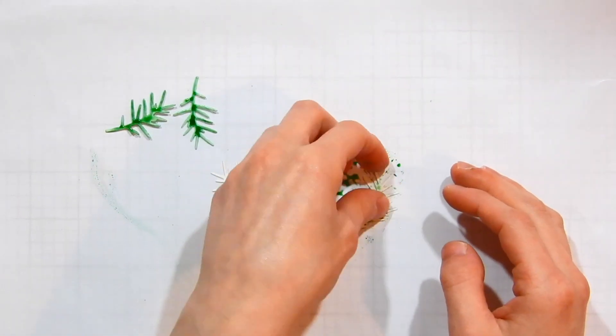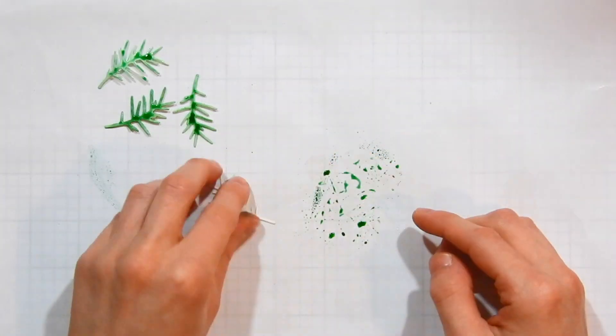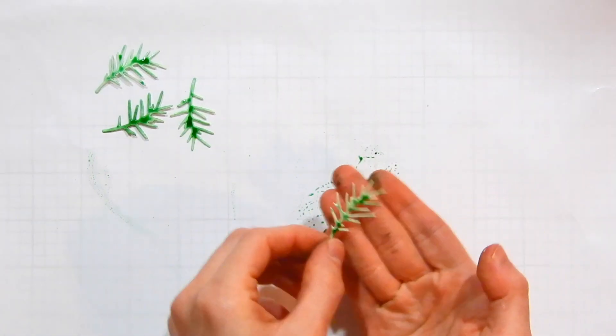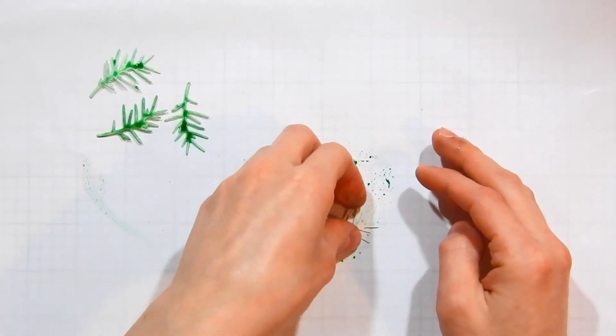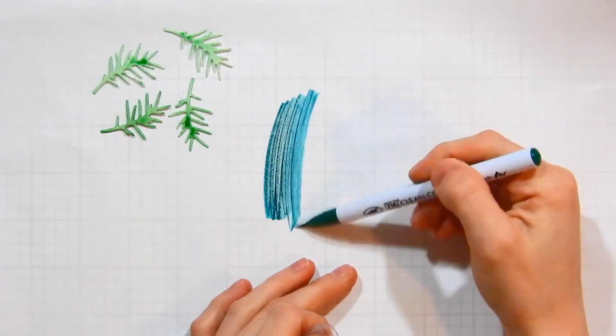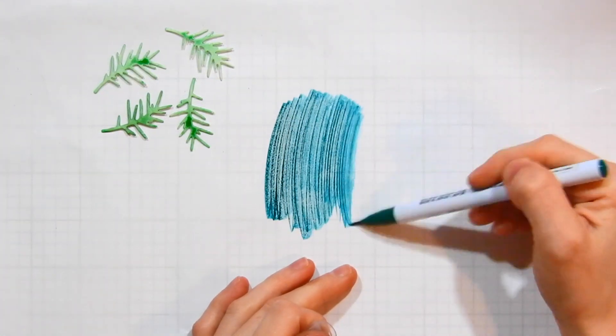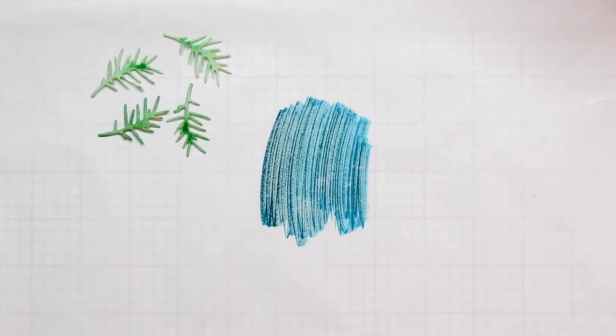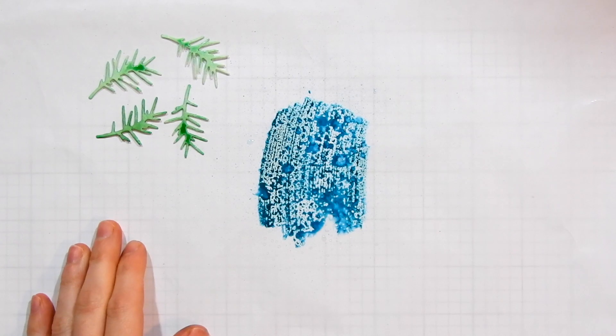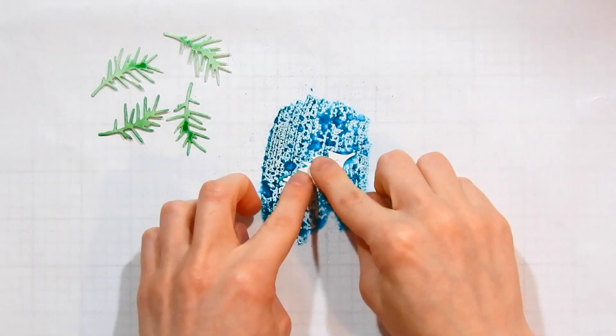Now for the watercoloring, I'm using the Zig Clean Color markers and I'm taking the die cut pieces and I'm smooshing them into some watercolor that I've added down onto a piece of freezer paper. Freezer paper is great because it's a nonstick surface and it's really easy to clean up.